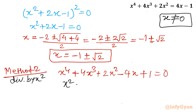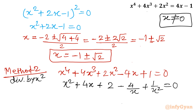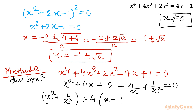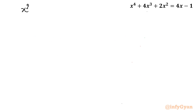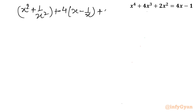After dividing by x², it becomes x² plus 4x plus 2 minus 4/x plus 1/x² equals 0. I will collect the first and last terms together, and the second and second-last terms together: (x² + 1/x²) plus 4(x − 1/x) plus 2 equals 0.